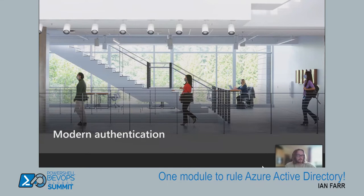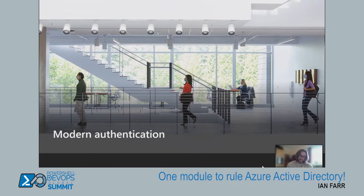Now — modern authentication. One of the really cool things about Graph PowerShell is it supports modern auth, which includes MFA (multi-factor authentication), via the Microsoft Authentication Libraries. One of the really cool things is passwordless support. Passwords are easy to guess and can be replayed across services — passwordless gives us the ability to authenticate without a password, and the Graph PowerShell module supports that.